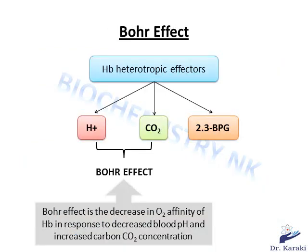Carbon dioxide and hydrogen ions are two heterotropic allosteric effectors of hemoglobin. They bind to different sites on the hemoglobin molecule, stabilize the T state, and lower its affinity for oxygen. This shifts the oxygen binding curve to the right and allows hemoglobin to unload more oxygen to exercising tissue. Together, the effect of hydrogen ions and carbon dioxide on hemoglobin is known as the Bohr effect.